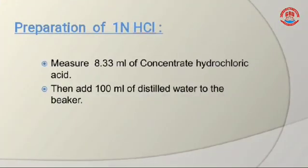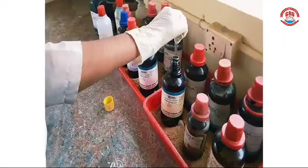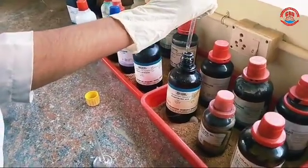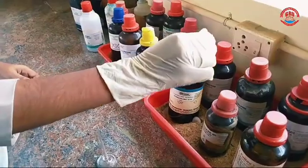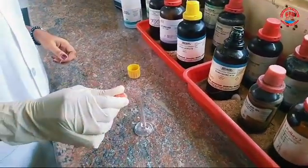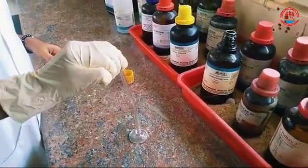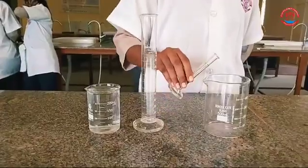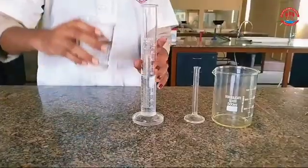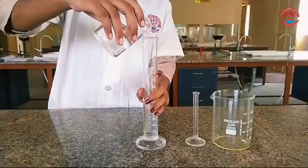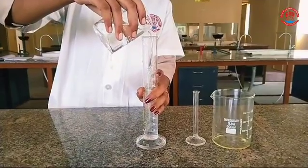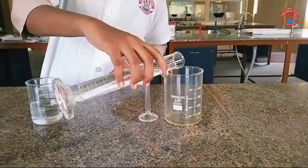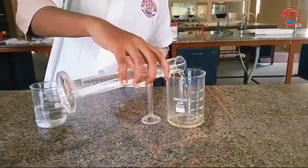Preparation of 1 normality hydrochloric acid: Measure 8.33 ml of concentrated hydrochloric acid, then add 100 ml of distilled water to the beaker.